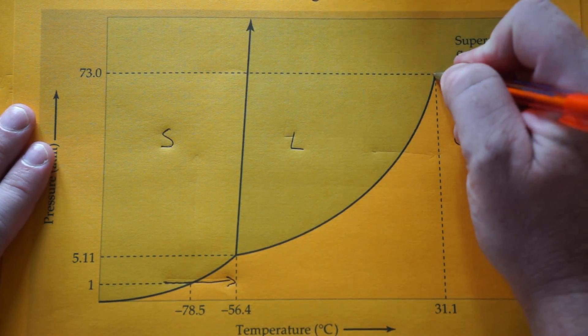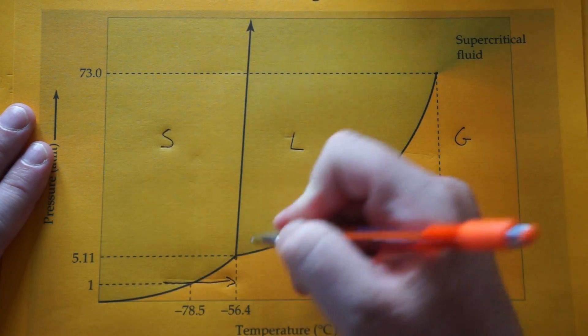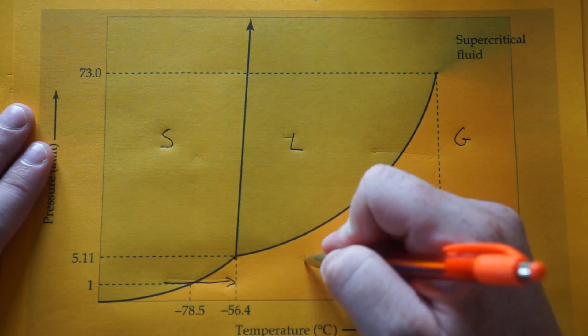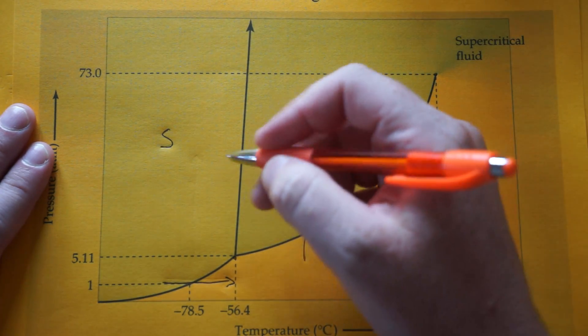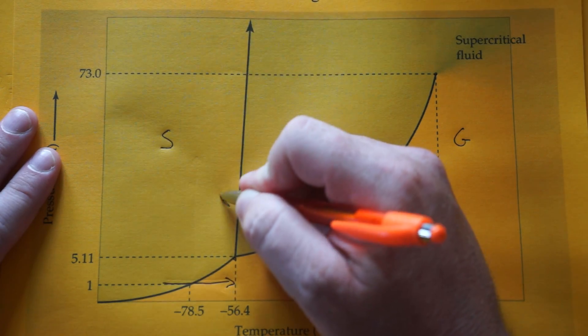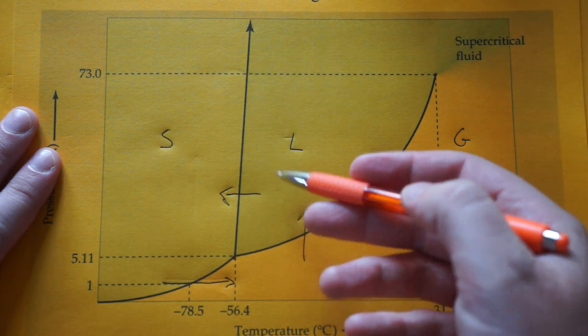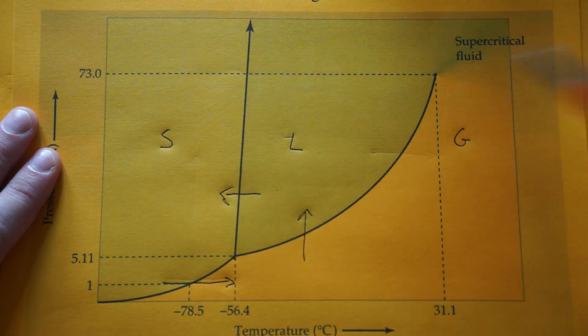Here's your critical point. Your triple point's right here. For phase changes, increasing the pressure will cause gas to become liquid. Decreasing the temperature, liquid will become solid. That would be freezing. This would be condensing.